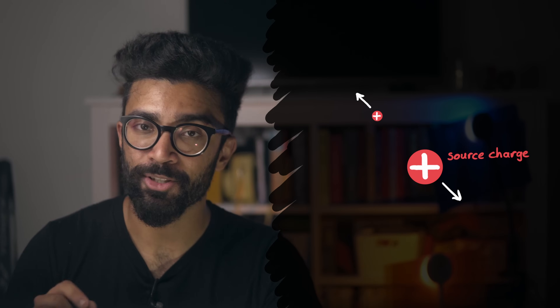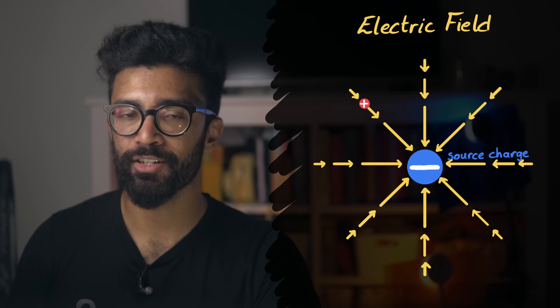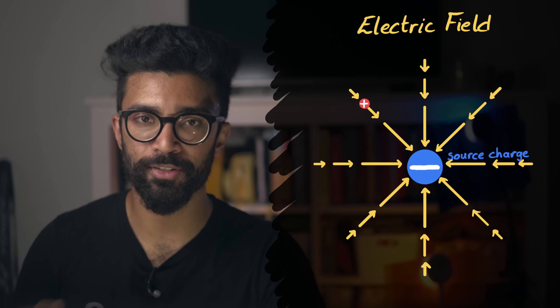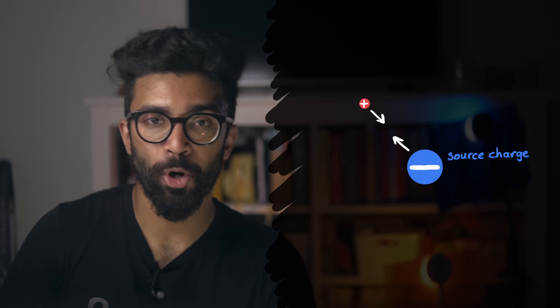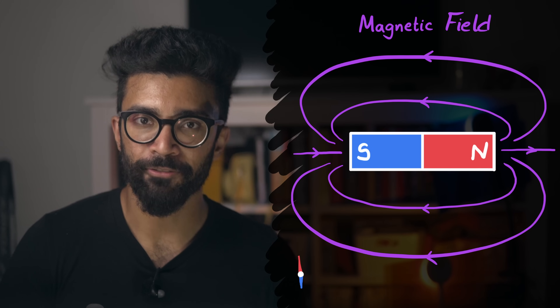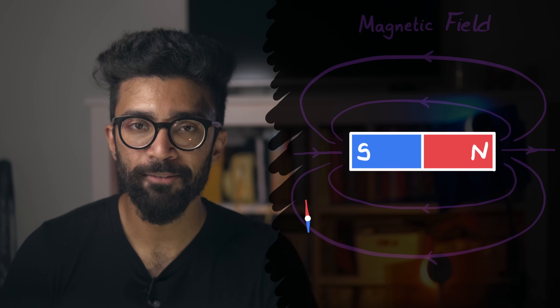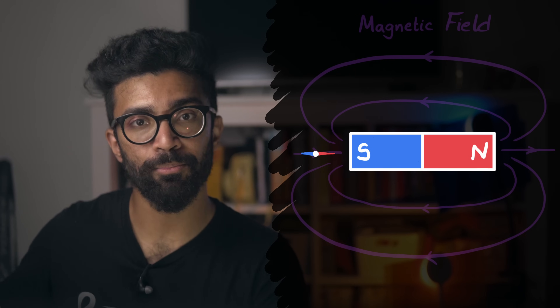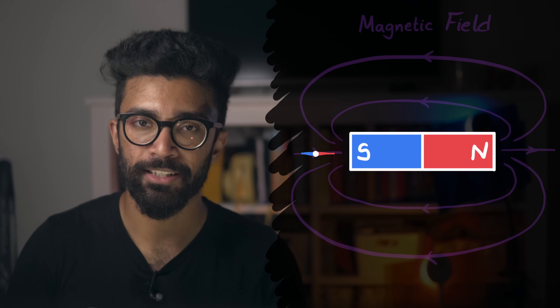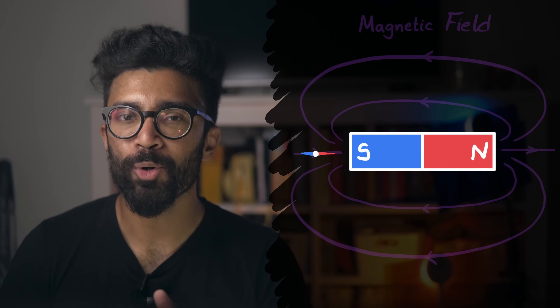If instead our source charge was negative, then the field would look like this, and so the little charge would experience a force that attracts it towards the negative source charge. This again makes sense because opposite charges attract each other. Magnetic fields behave in a somewhat similar way, but show the effect of magnetic forces. Once again, opposites attract, but this time it's magnetic poles rather than electric charges, and like poles repel each other. If you want a more detailed discussion of what electric and magnetic fields represent, as well as how we deal with them mathematically, then check out this video I made on my channel a little while ago, also linked in the description box below.